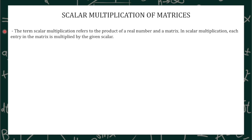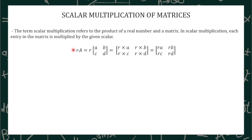The term scalar multiplication refers to the product of a real number and a matrix. In a scalar multiplication, each entry in the matrix is multiplied by the given scalar. Suppose we have the following equation RA, where R stands for a real number and A stands for our matrix.